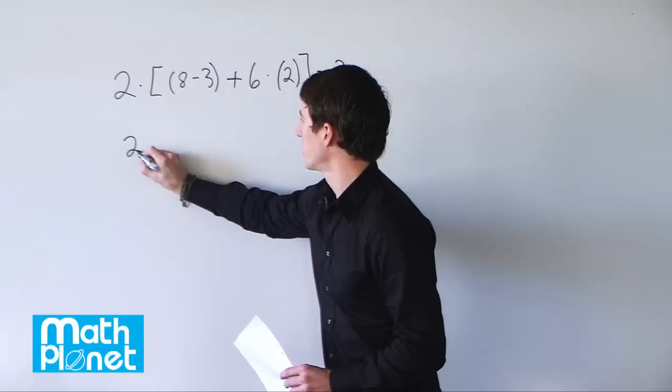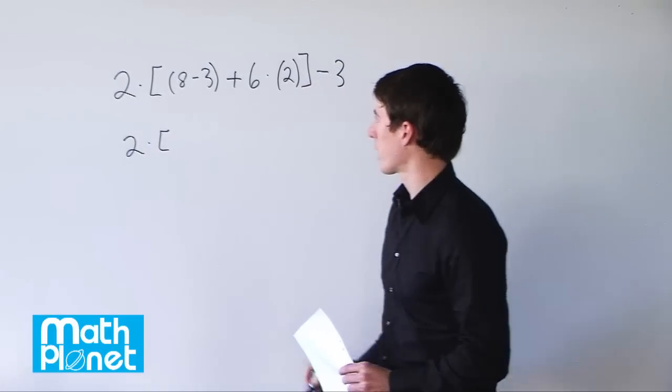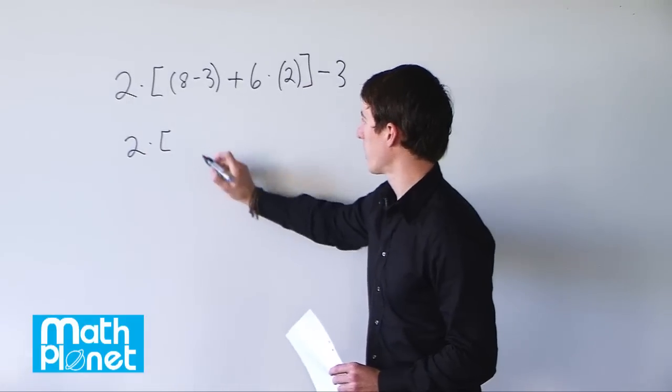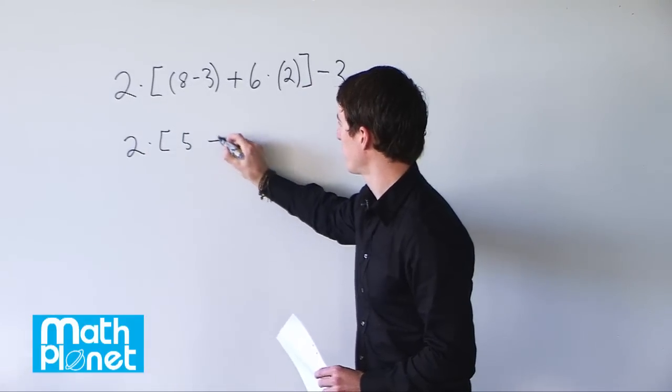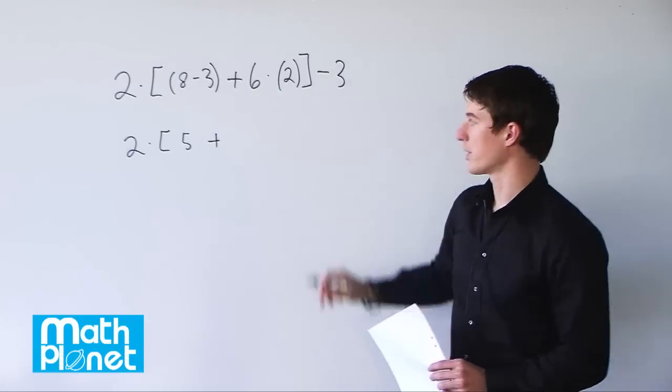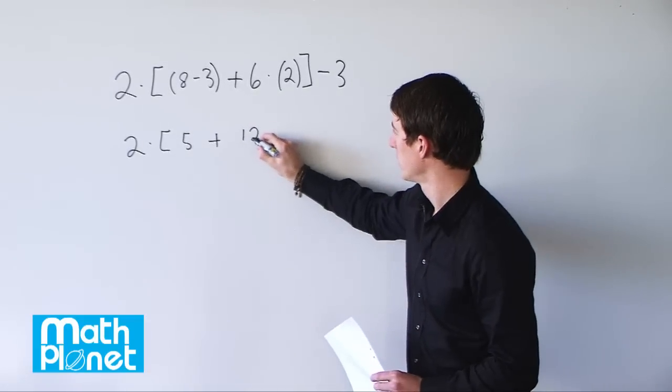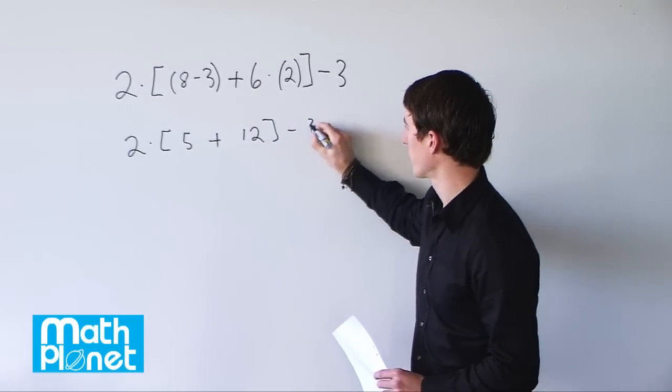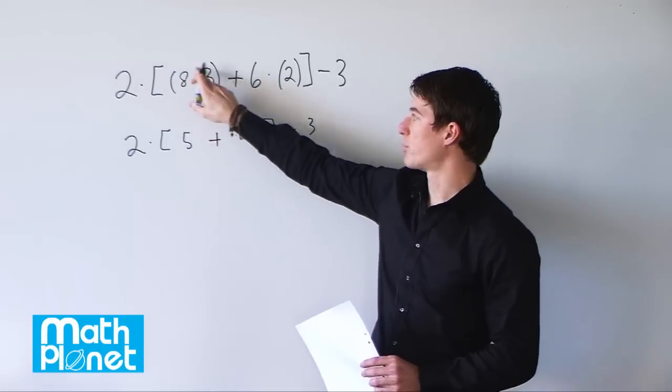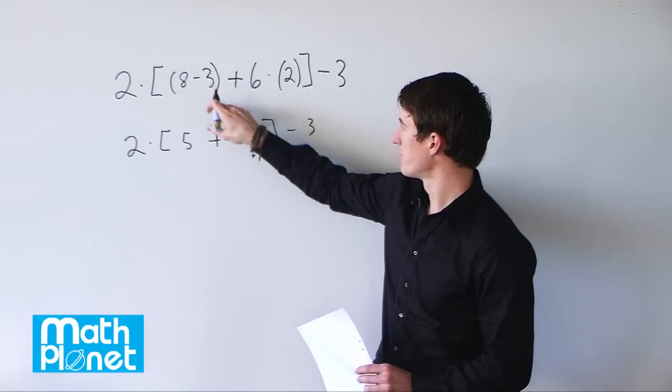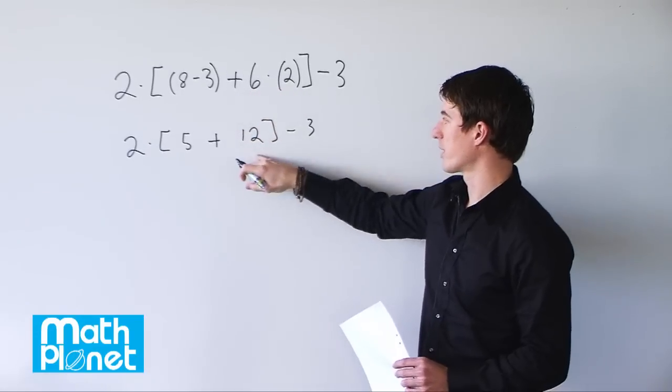So if we leave the 2 outside of the bracket, 8 minus 3 becomes 5 plus 6 times 2 becomes 12 minus 3. So we've done the bracket first here, this parentheses, and we've done 6 times 2, so that takes care of that bracket.